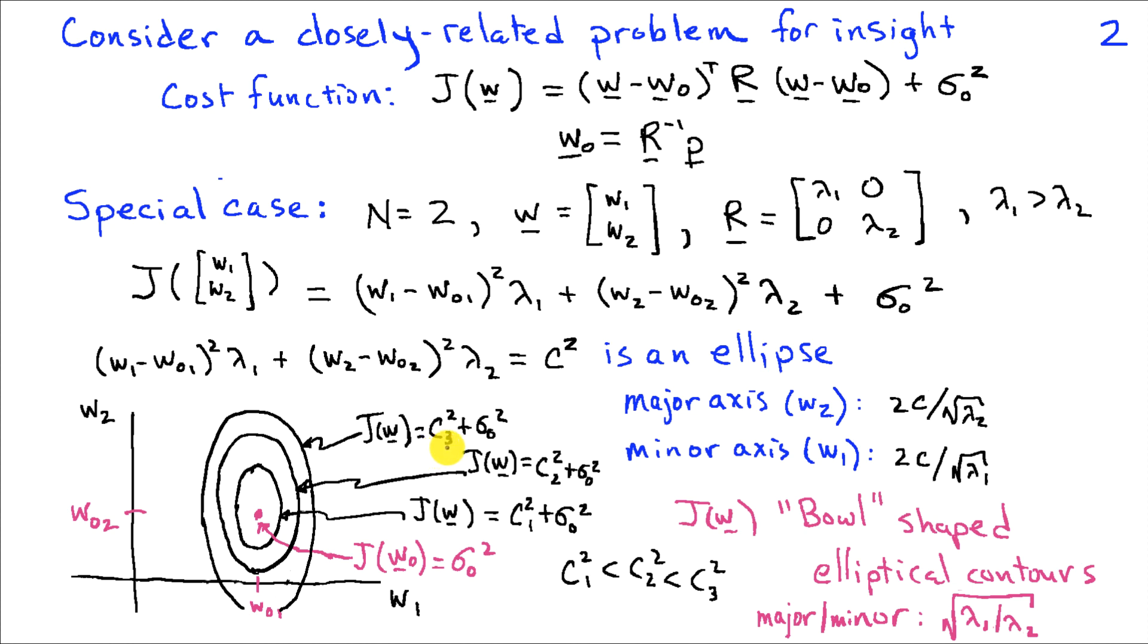We'll add a third contour that brings us further up the side of the bowl. We can see from examining this bowl that the ratio of major to minor axes is the square root of lambda 1 divided by lambda 2. And if that ratio is large,